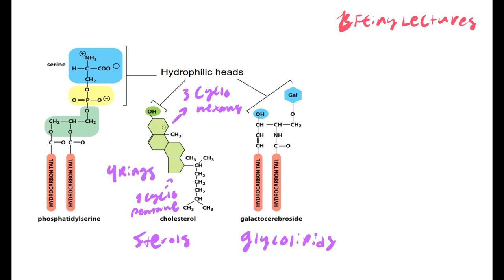Cholesterol is the foundation for other hormones like progesterone, estrogen, and testosterone. Glycolipids are mainly found on the exterior part of the cell membrane — they stick out of the cell membrane into the external environment.